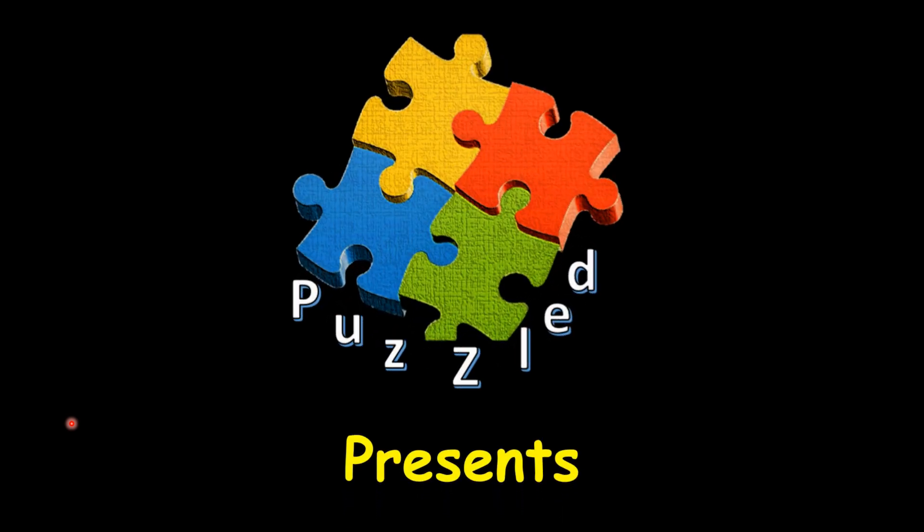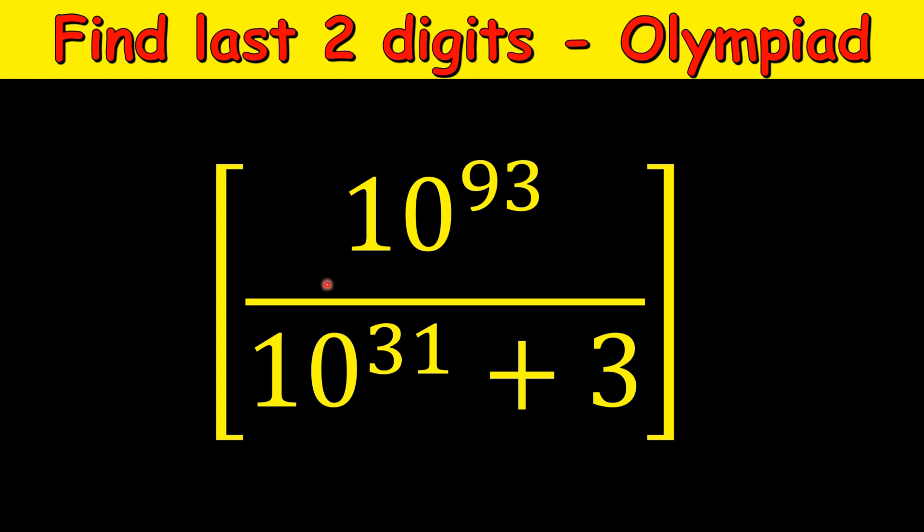Hello friends, we are back with a new math problem. Today's problem is to find the last two digits of this big number. We have 10 raised to the power of 93, and in the denominator we have 10 raised to the power 31 plus 3. The square bracket denotes the floor function or the greatest integer function.